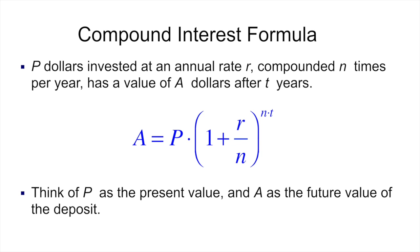Growth means the base is greater than 1; decay means the base is less than 1. Now here's the first interest formula — write this one down in your notes. P is the principal, the amount of money you initially invest. In the earlier example we mentioned a thousand dollars invested at eleven percent, so a thousand would be the principal amount.